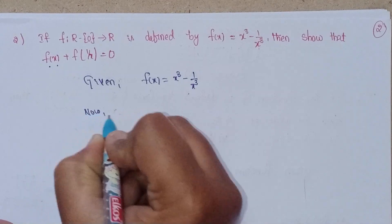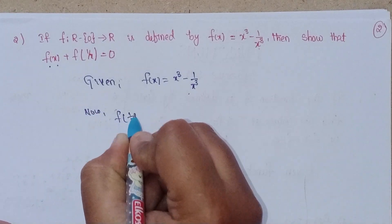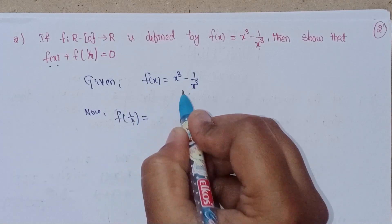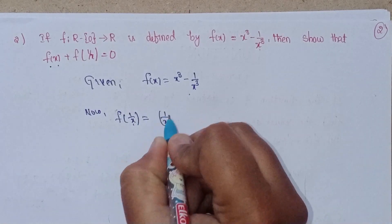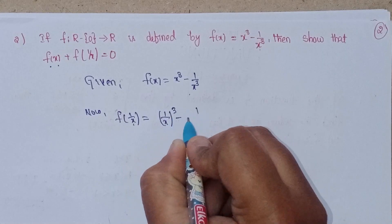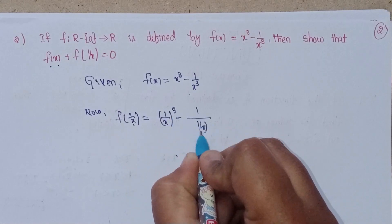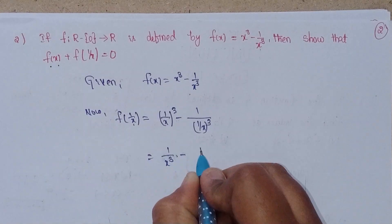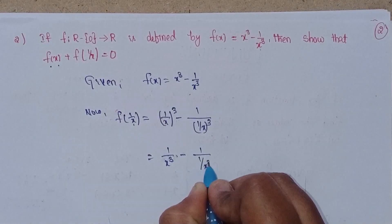To find f(1/x), substitute 1/x in place of x: f(1/x) = (1/x)³ - 1/(1/x)³, which equals 1/x³ - x³.